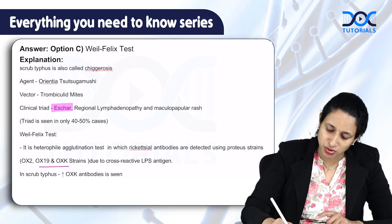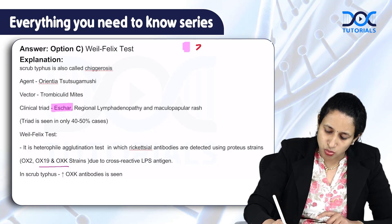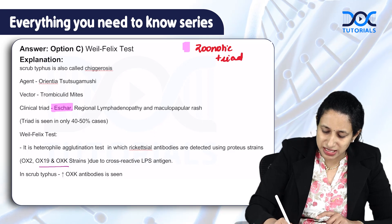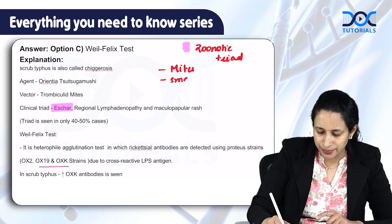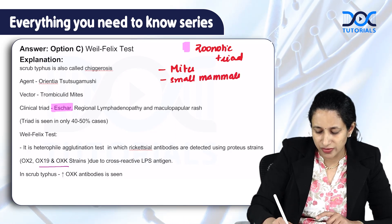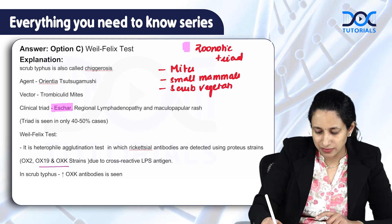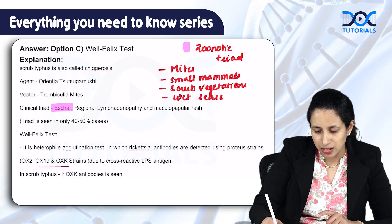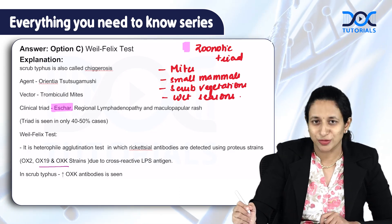There is another important concept called the zoonotic triad. The zoonotic triad basically consists of mites with the presence of small mammals. It is called scrub typhus because of scrub vegetation. Lastly, it is associated with the wet season, so you usually see an increased number of cases during the rainy season. These are all the important points to remember about scrub typhus.